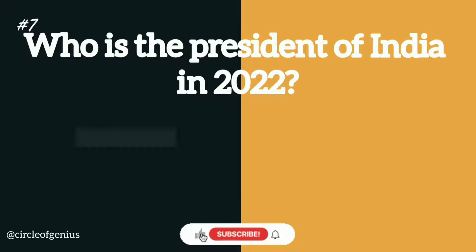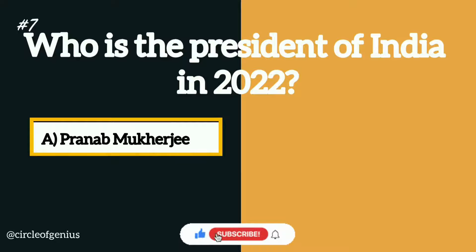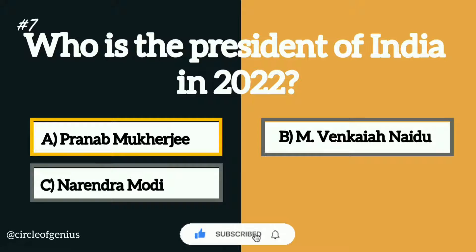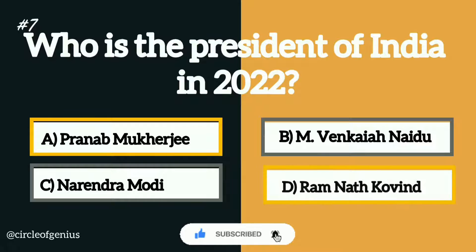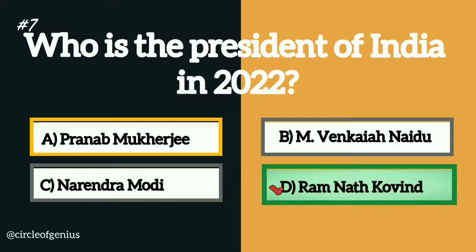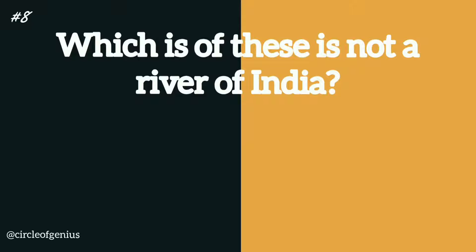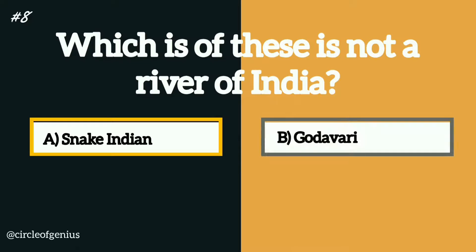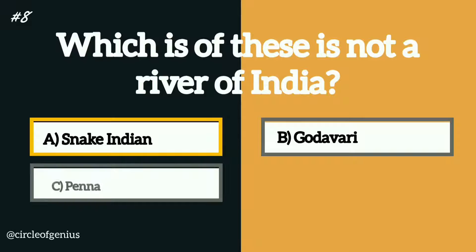Question number seven: who is the president of India in 2022? Option A: Pranab Mukherjee, B: M Venkaiah Naidu, C: Narendra Modi, D: Ramnath Kovind. Question number eight: which of these is not a river of India? Option A: Snake Indian, B: Godavari, C: Penna, D: Bhima.